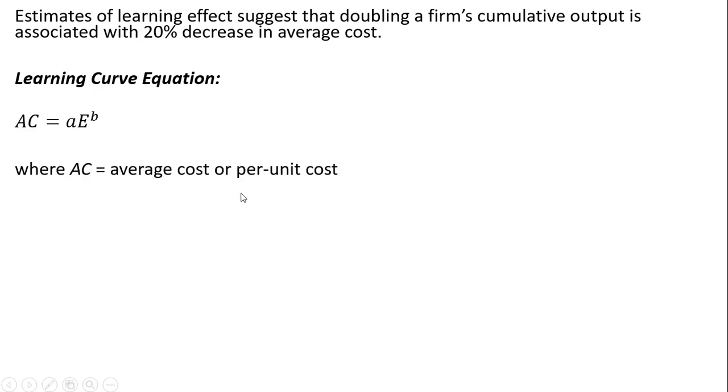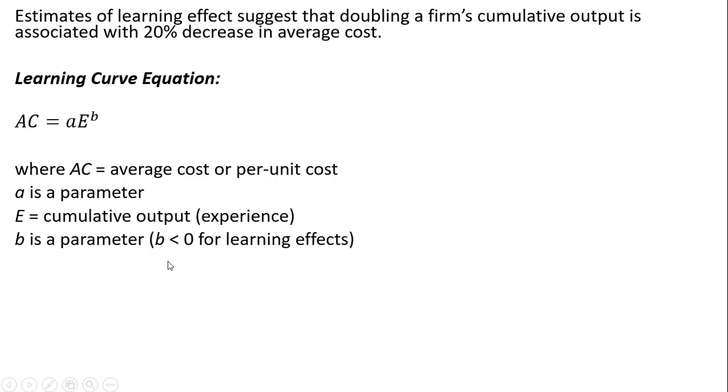AC is the average cost or per-unit cost. A is a parameter. E represents cumulative output or experience. B is a parameter, and B will be negative for the learning effect. In other words, as cumulative output increases, average cost will fall.